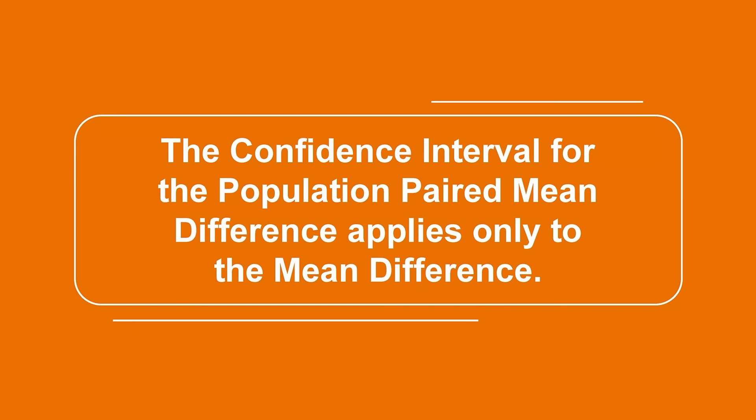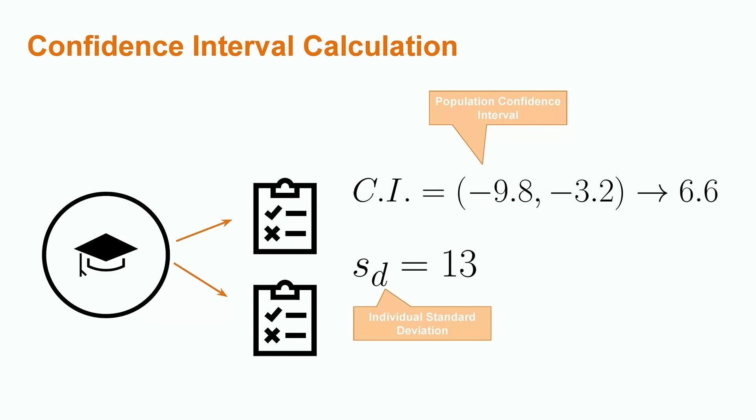Finally, note that the confidence interval for the population paired mean difference applies only to the average difference, not the range of differences among individual data points, which can often be larger. For example, in our dataset, the size of the confidence interval is only 6.6 points, while the standard deviation of the sample differences for individual scores was 13 points. It is important to keep such distinctions between individual data point and population average statistics in mind.